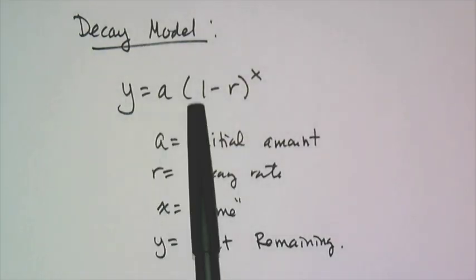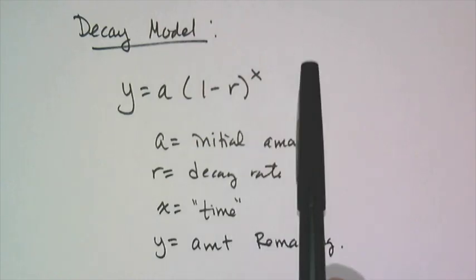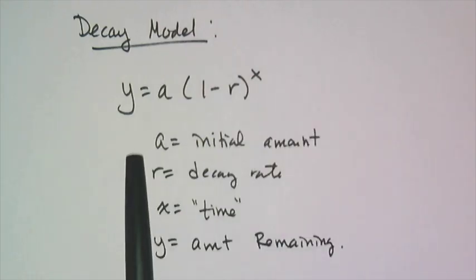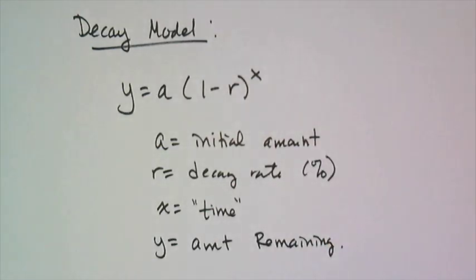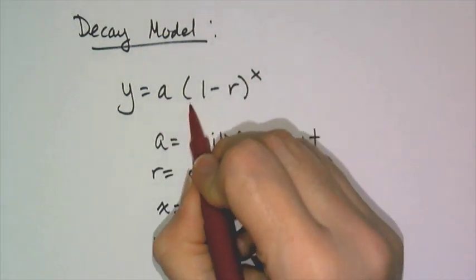Y equals A, open parenthesis, 1 minus R, raised to the X. Where A is the initial amount, R is that decay rate that's given to you as a percent that has to be converted to a decimal. X is going to be like the time or whatever your independent variable is going to be. And Y is going to be the amount remaining.